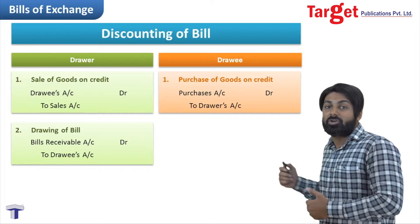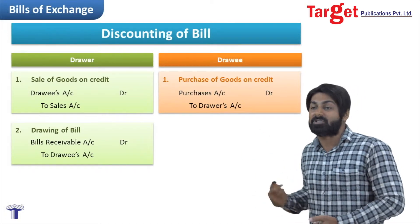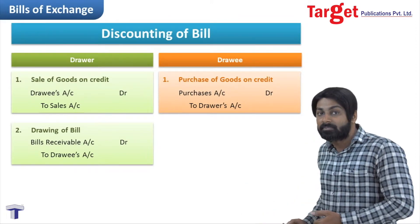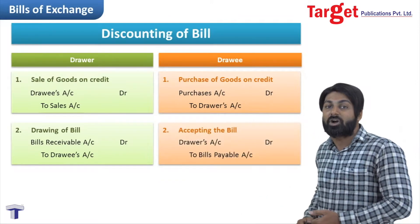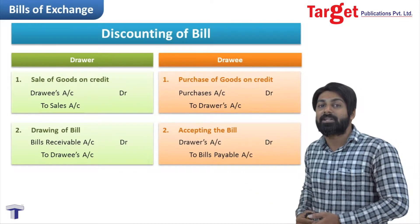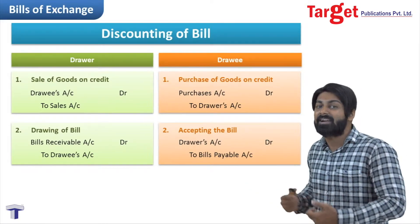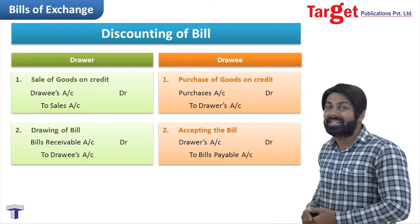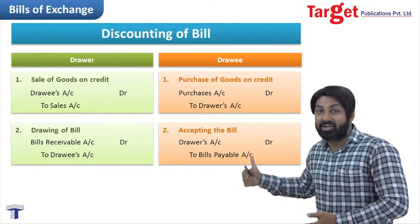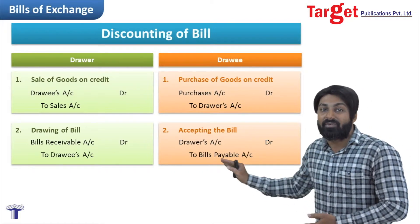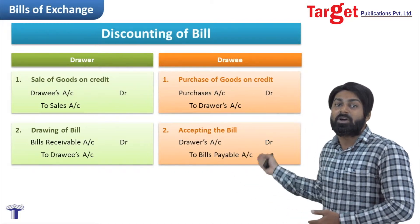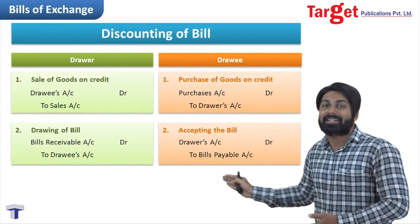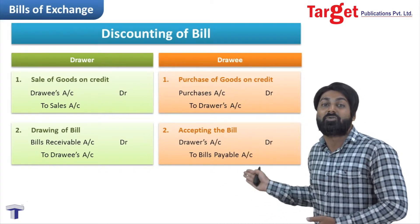After that, the drawer draws the bill and the drawee accepts it. In the books of the drawer for receiving acceptance: Bills Receivable account debit to Drawee's account. In the books of the drawee: Drawer's account debit to Bills Payable account. Bills Receivable is debited because debit what comes in. Drawer's account is debited because debit the receiver — he is receiving the bill. Bills Payable is credited because the bill is going out.